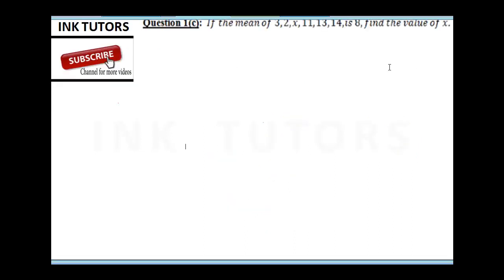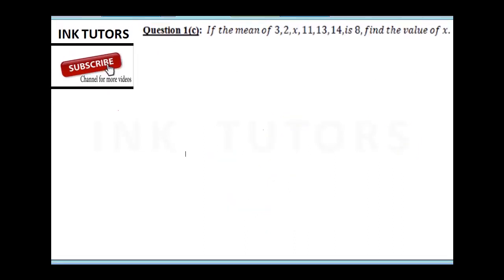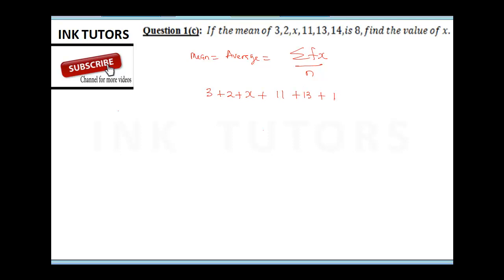Question 3 says: if the mean of 3, 2, x, 11, 13, 14 is 8, find the value of x. The mean is also the average — to find it, you sum all the individual numbers and divide by the total count. Note that 8 is the mean, not one of the data values, so we have 6 numbers total.